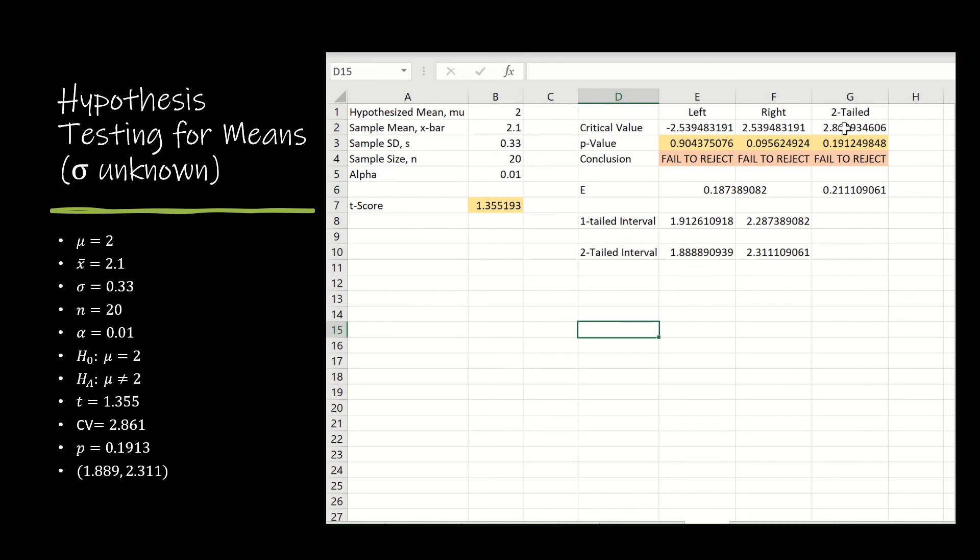So what's the critical value? Remember, when we're finding the critical value, we need a two-tailed critical value. So I don't have to worry about taking alpha divided by 2 in the T model because Excel actually has a T inverse two-tail.